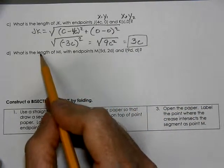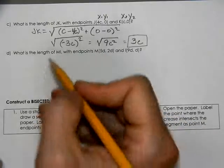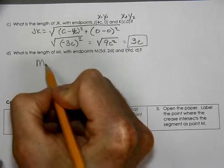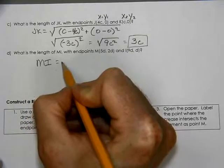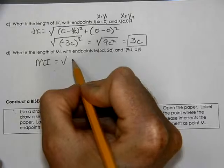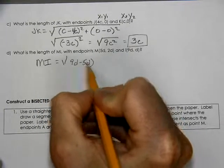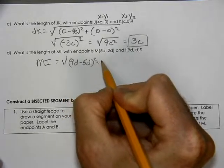Looking for the length of MI. It's a length again, so whenever we find length, we're going to use the distance formula. So 9D minus 5D, those are your X's, squared, plus—since I started with 9D, I have to start with D, then I did the 5, so I'm going to work with the 2.